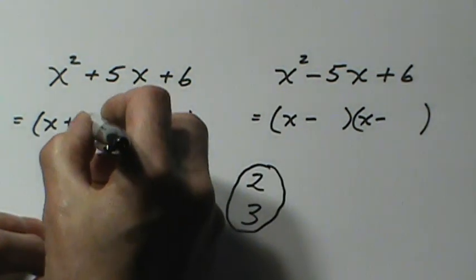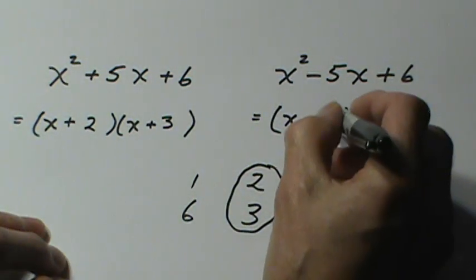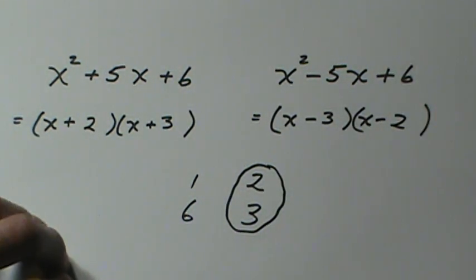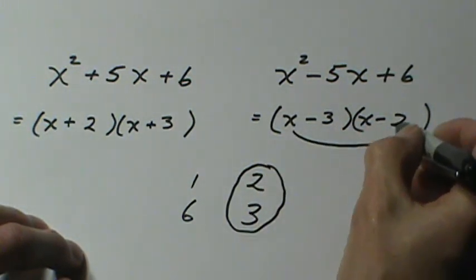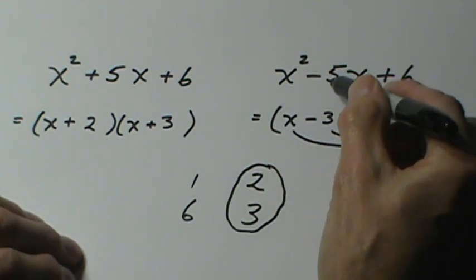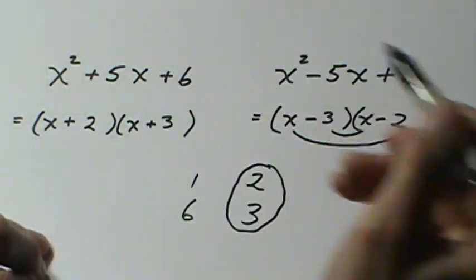Now it doesn't matter what order you put them in. You can put the two and the three or the three and the two. It's not going to matter because when you check the middle term you see both of these terms get a negative sign. That's what gives us the negative five in the middle here and the positive five in this case over here.